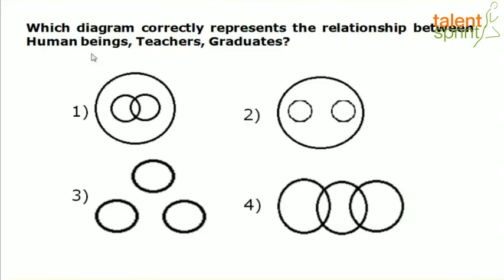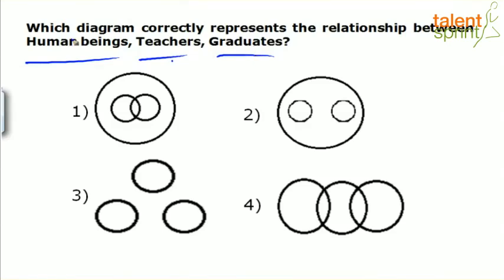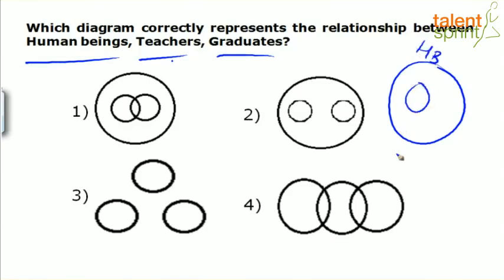Next question: which diagram correctly represents the relationship among human beings, teachers and graduates? Clearly all teachers are human beings, and all graduates are also human beings. So human beings is the superior-most set. Teachers must be inside human beings, and graduates should also be inside human beings.